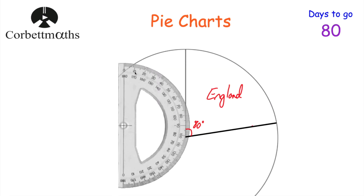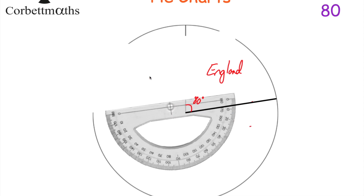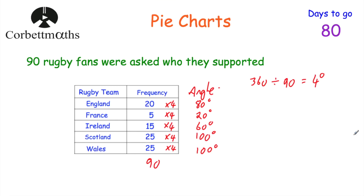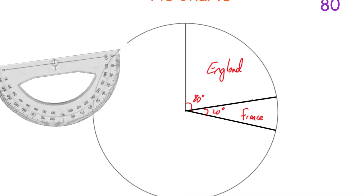We go to our pie chart, get our protractor and rotate it so the center is still in the center of the pie chart and the zero is on the line we've just drawn. Every time you draw a new line you put the zero on that new line. We measure 20 degrees: 10, 20 — that'll be there. So that's the sector for the French fans. Next we've got the Irish fans and that's a 60 degree angle, so we measure 60 degrees.